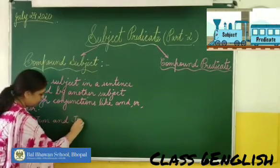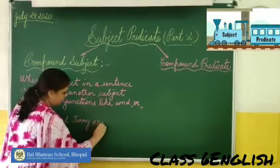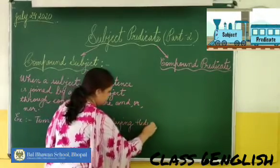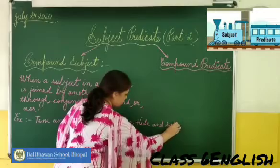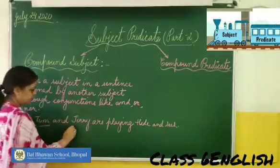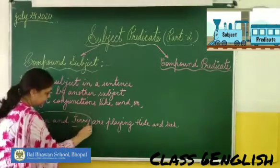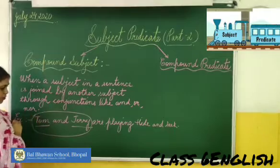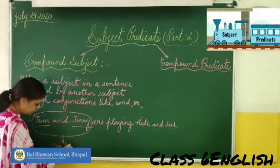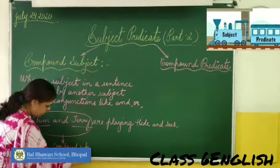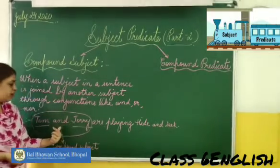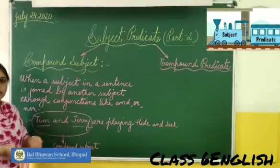For example: 'Tom and Jenny are playing hide and seek.' Let's identify the subjects here. Tom and Jenny — there are two subjects in this sentence, so that means it is a compound subject. Both subjects are joined by the conjunction 'and'.